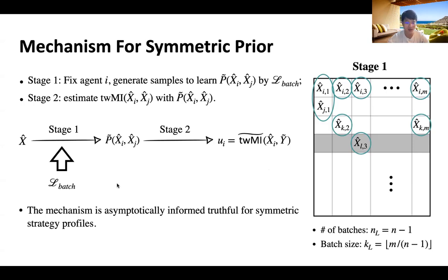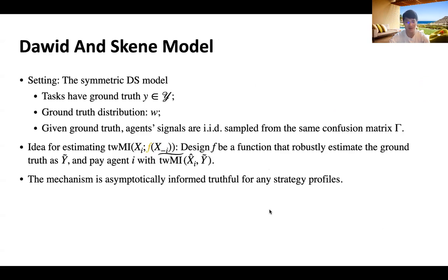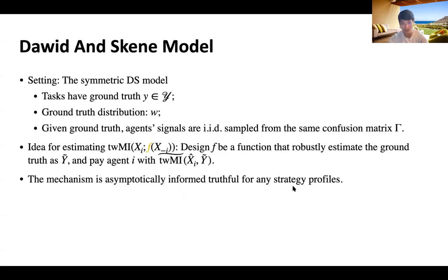We prove that this mechanism is asymptotically informed truthful for symmetric strategy profiles. Can we do better? The symmetric strategy profile assumption is quite limiting. We provide a positive answer in the DS model, where tasks have ground truth and, given the ground truth, agent signals are IID samples from the same confusion matrix. Our idea is to design f as a ground truth recovery function and pay agent i the estimated mutual information between her report and the recovered ground truth. We prove this mechanism is asymptotically informed truthful for any strategy profiles, which is a stronger result.